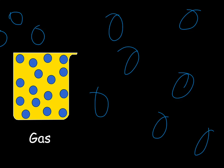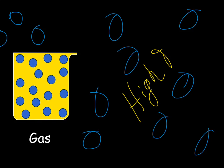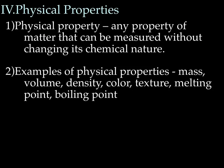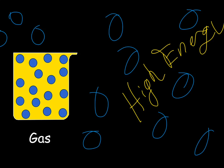Particles of a gas can move freely — they are not connected. If we talked about their energy, a gas has high energy. Gas particles take up as much space as they can, since they don't really like to stay next to each other.